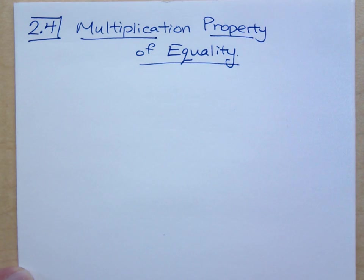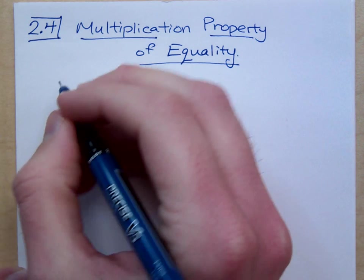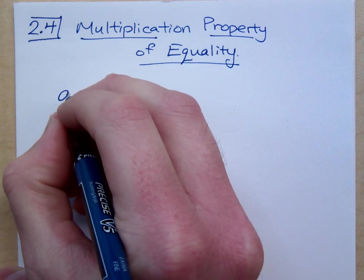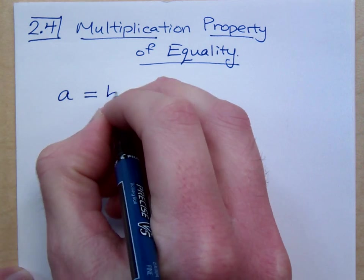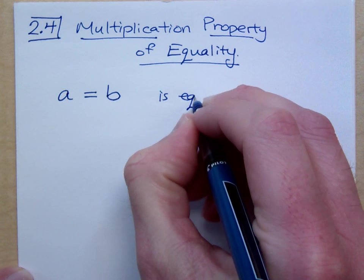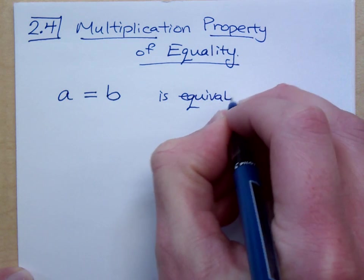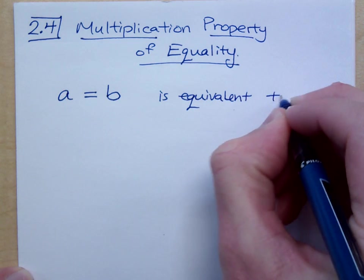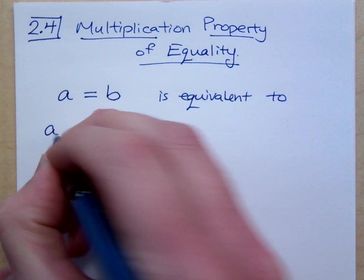There can be a division aspect to this because division is a form of multiplication if you're paying attention. The multiplication property says this, much the same way we have with the addition property.